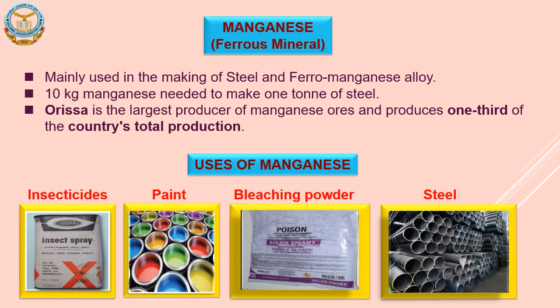Manganese is the second important major ferrous mineral in India. It is used for a variety of purposes like insecticides, paints, bleaching powder, and most importantly in making steel. Nearly 10 kg of manganese is required to manufacture 1000 kg of steel. It is also used in ferro-manganese alloy. Odisha is the largest producer of manganese in India, producing one-third of the country's total production.